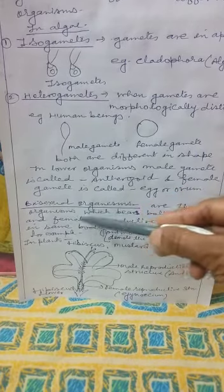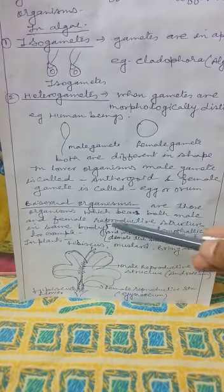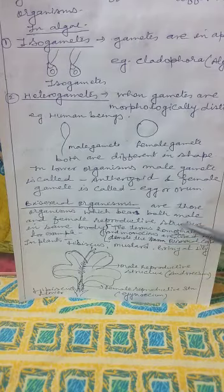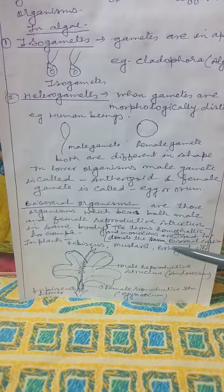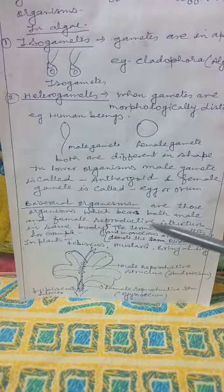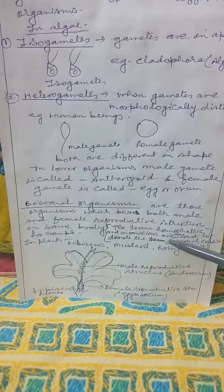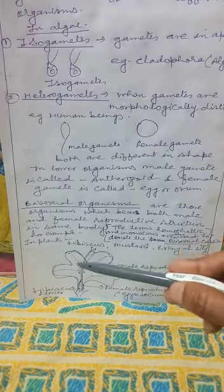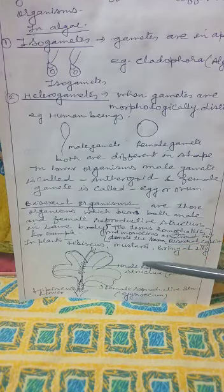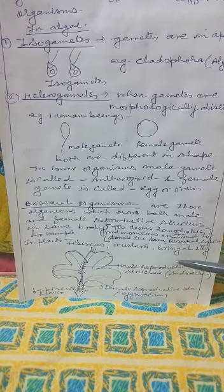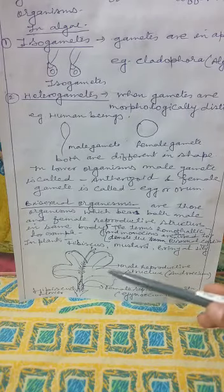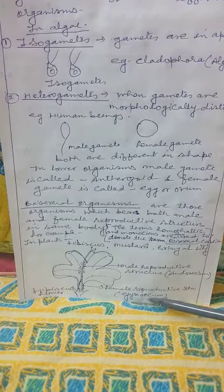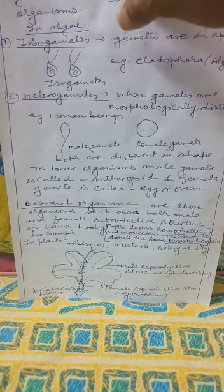A new term is bisexual organism. Bisexual organisms are those organisms which bear both male and female reproductive structures in the same body. The terms homothallic and monoecious are also used to denote the bisexual condition. Examples of bisexual organisms include hibiscus, mustard, brinjal, and lily. In a hibiscus flower, the male sex organ is the androecium and the female sex organ is the gynoecium, making it a bisexual flower.